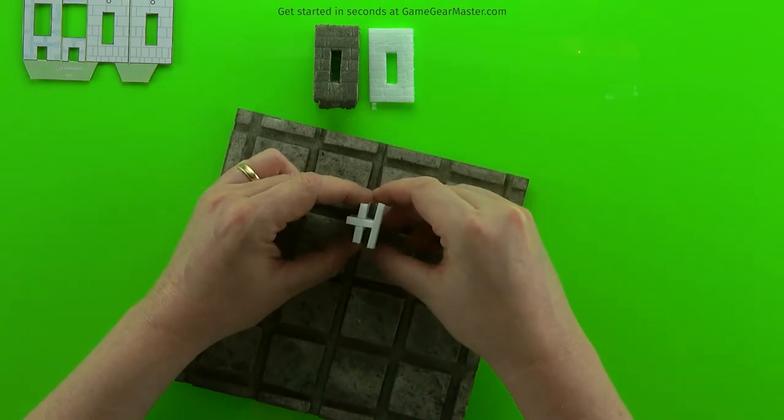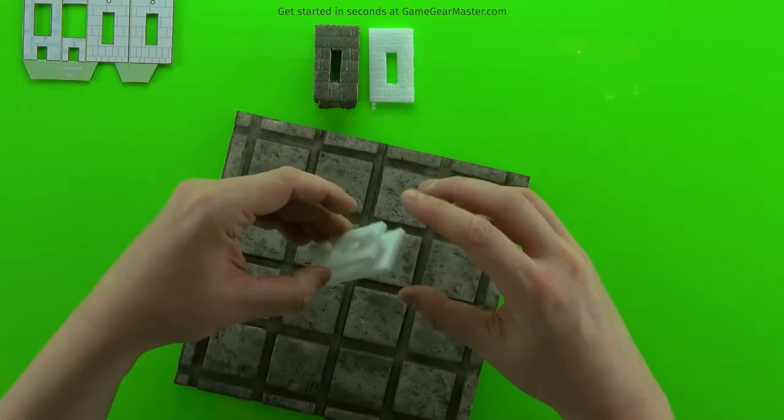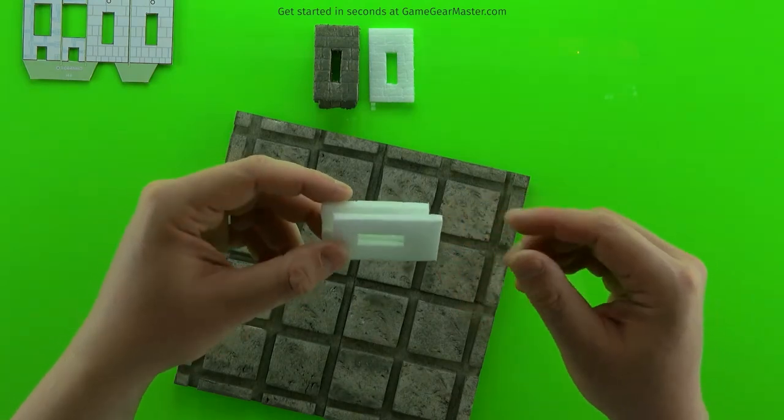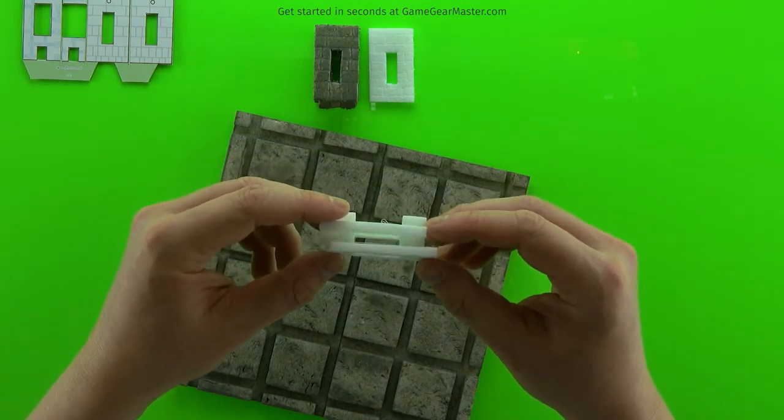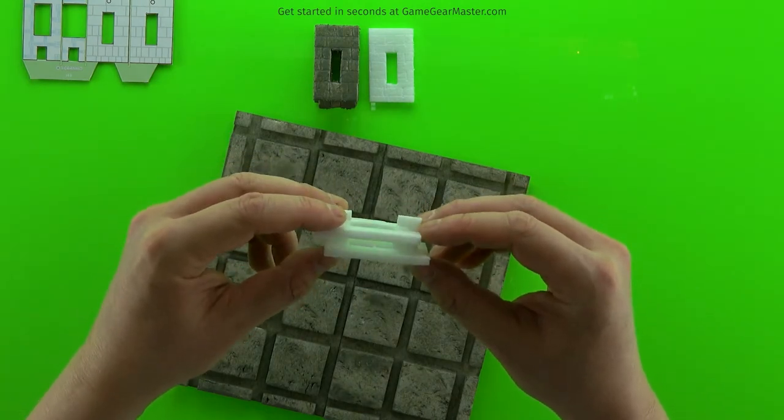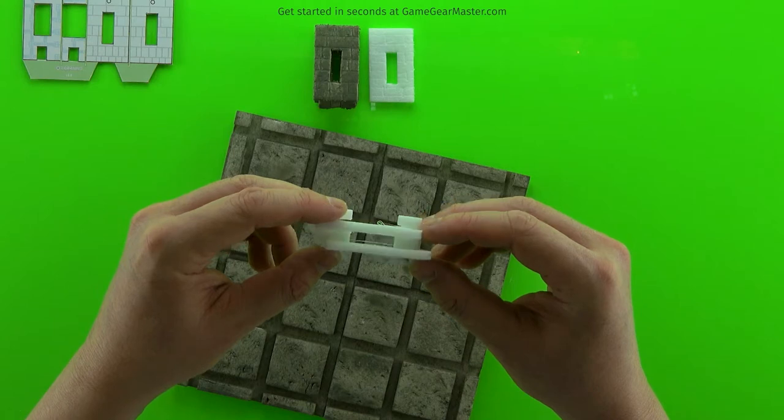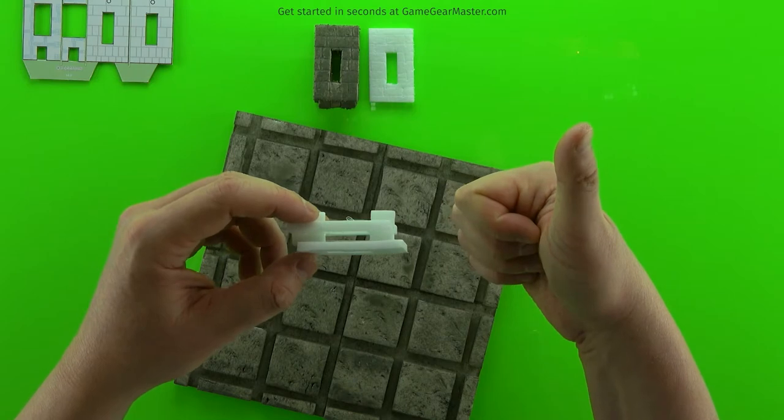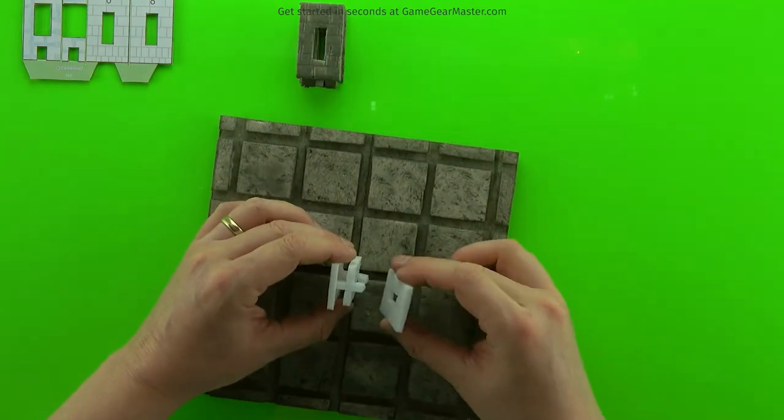And just glue it on, using a grid square to set the depth of the interior part just like for regular connectors. There you go. And you see that lines up, that hole lines up with the interior void in the connector. And just put on the other piece the same way.